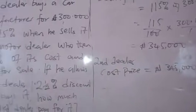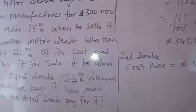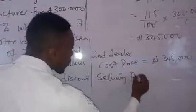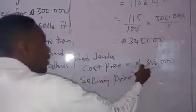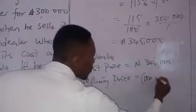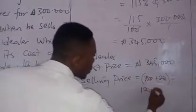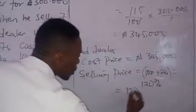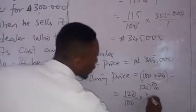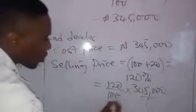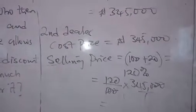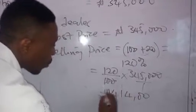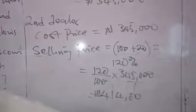The second dealer now added 20% to sell it. This is 100% of the cost price plus 20%, which gives 120%. So the selling price is 120 over 100 times 345,000 over 1. That gives you 414,000 Naira. So the second dealer wanted to sell his car for 414,000 Naira.